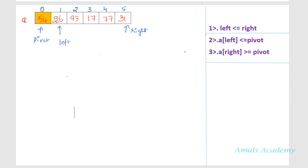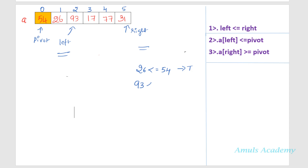Now we need to compare the values with the pivot element. First we start from the left. I need to check whether left index is less than or equal to right — yes, left is 1 and right is 5, so left is smaller. I check the value at left index: is 26 less than or equal to pivot 54? Yes, it is true, so I move to the next value. Left now points to 93, left index is 2. Again I check: is left less than or equal to right? Yes. Is 93 less than or equal to 54? No, it is false, so I stop here.